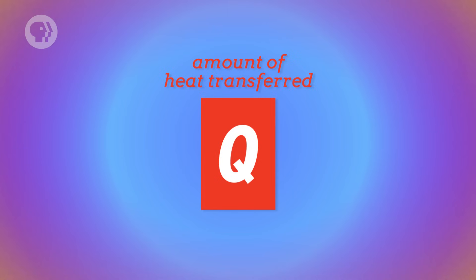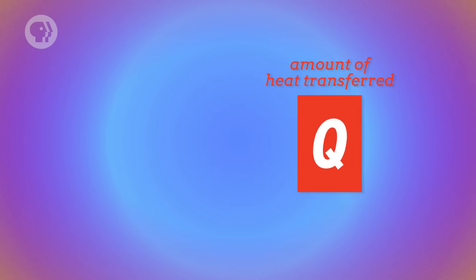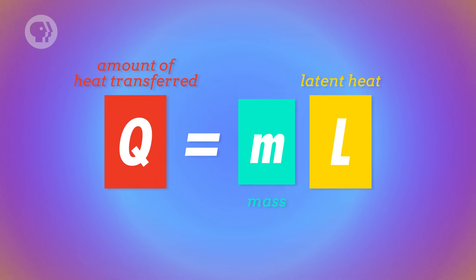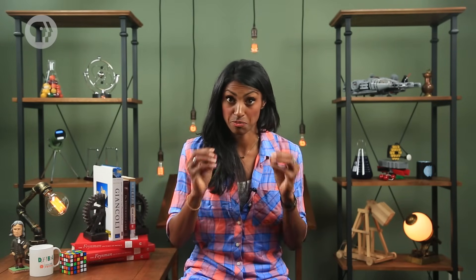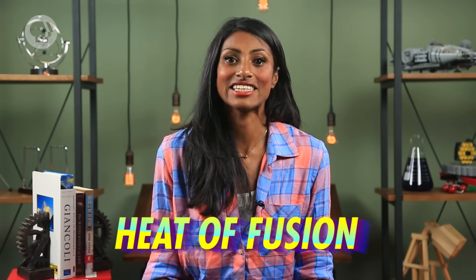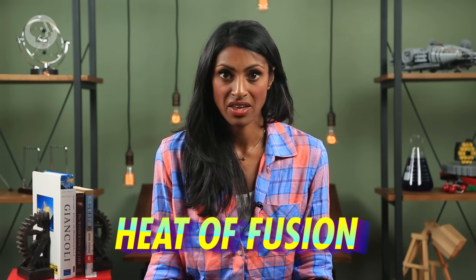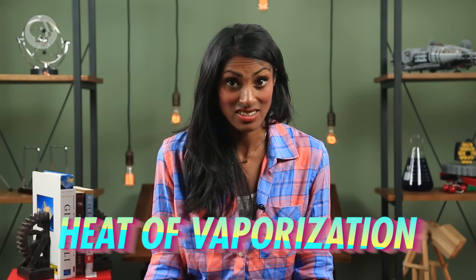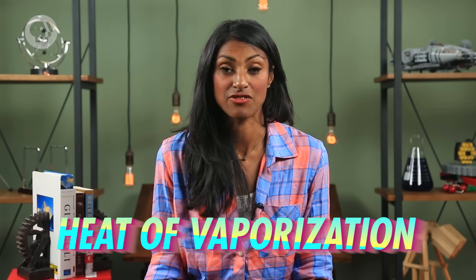Instead, the amount of heat that gets transferred during a phase change is equal to the mass times what's known as the latent heat. Latent heat is the heat required to change the phase of a substance. And like specific heat, its value depends on the substance. The value also depends on the phase change. For a change from solid to liquid, it's known as the heat of fusion. And for a change from liquid to gas, it's called the heat of vaporization.